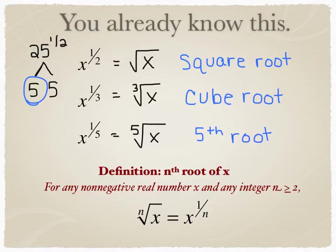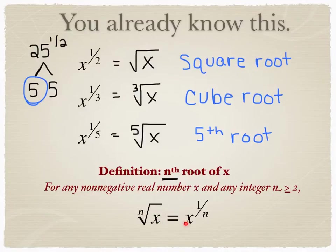Down here at the bottom, you'll want to copy down the definition of what it means to be a root of x. When I say nth root, that could be a fourth root, a fifth root, an eighth root — any kind of root. The nth root of x is the same thing as x to the power of one over that number. So when you have a number sitting out here, it's the same thing as having a fraction exponent of one over whatever that number is.